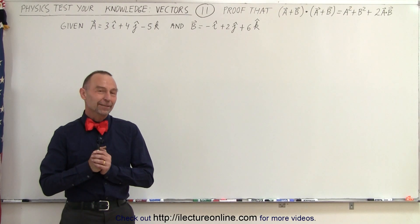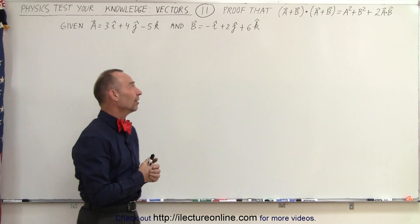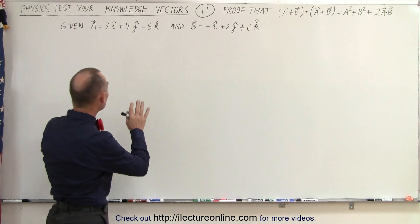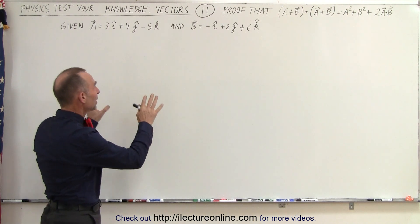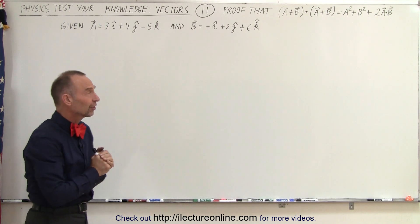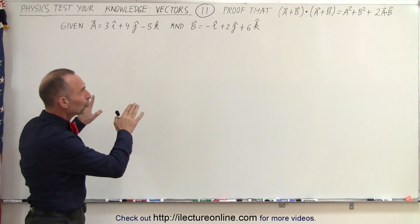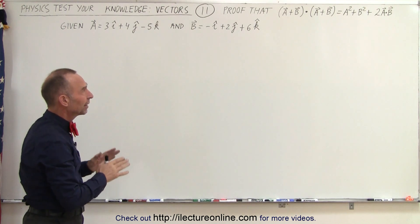Welcome to ElectronLine. Now let's have a bit of fun. Take a look at this. We do have the two vectors a and b like we did in the previous example, but let's ignore those for a moment.